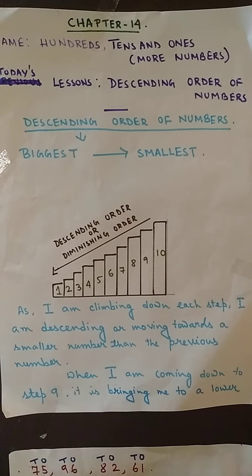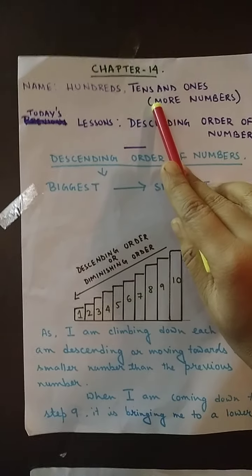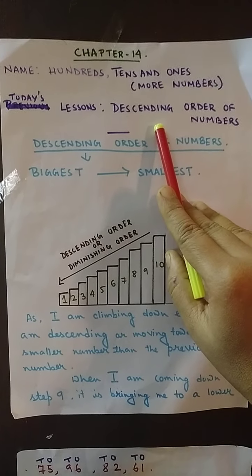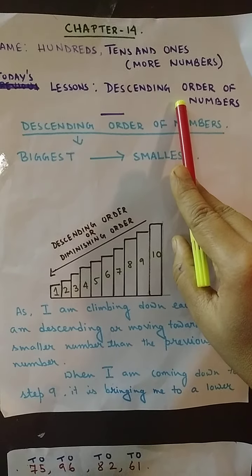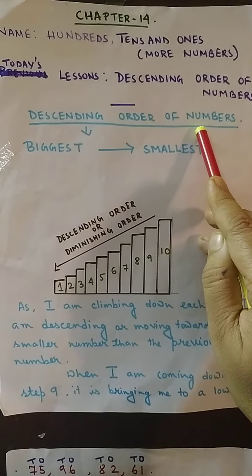Namasivaya, students. With Amma's grace, I think you are doing well. We were doing Chapter 14, and the name of the chapter is '100s, Tens and Ones with More Numbers.' Previously, we had learned ascending order of numbers and I had given you a few exercises. I hope you have practiced those. So today, we will do exactly the opposite thing — that is the descending order of numbers.